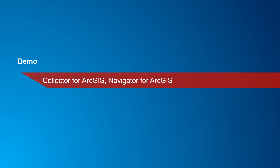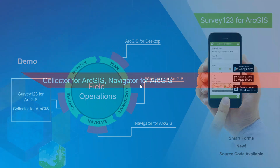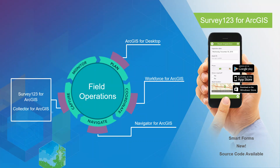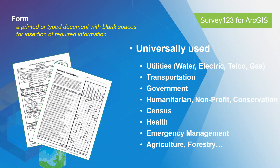Now we continue with Survey123 for ArcGIS. We've looked at how Workforce for ArcGIS integrates with Navigator and Collector, and now we look at Survey123 as another app for collecting data. You can download Survey123 from Google Play, the App Store, or the Windows Store. Survey123 allows us to use forms — a form is essentially a printed or typed document with blank spaces for required information — and it can be used universally in utilities such as water, electric, telecom, or gas, and other industries.